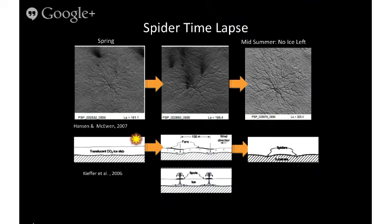We think that these spiders and fans can tell us about the Martian climate, particularly the wind — they serve as markers of which way the wind was blowing and how it was blowing. They can also potentially tell us how one Martian winter may have been different from another based on properties of the ice sheet. These dendritic spider channels are being carved as that carbon dioxide gas runs around underneath the ice sheet before it breaks through.